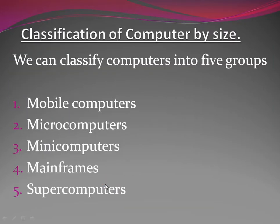Computers are available in different sizes and types. In this chapter, we will discuss the classification of computers on the basis of their sizes. We will also discuss some not-so-common input and output devices such as smart card reader, magnetic ink character reader, brain printers, etc.